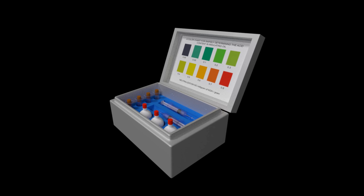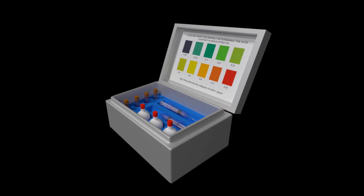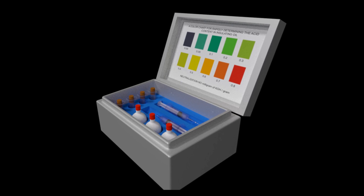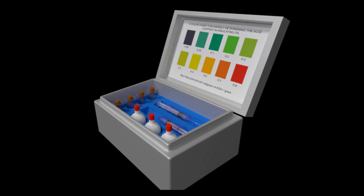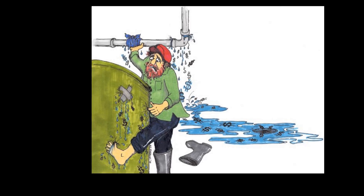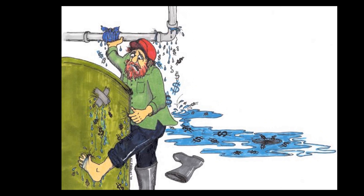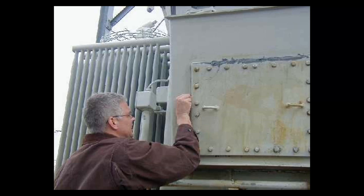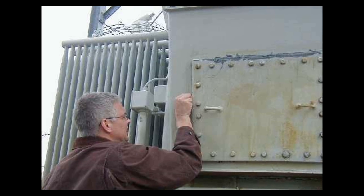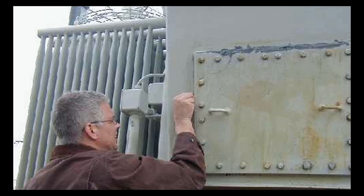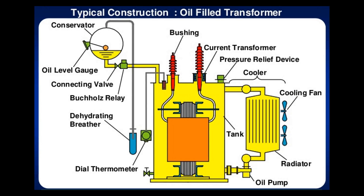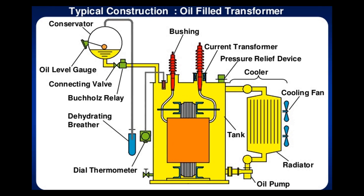Transformer acidity test. Insulating oil in the transformer may occasionally come into contact with air — this may happen during opening of any blanking or due to leakage in the oil tanks or in associated pipelines. Because of that, oxidation reactions in the transformer oil take place.